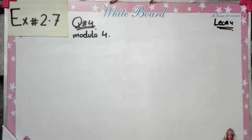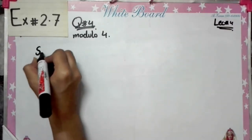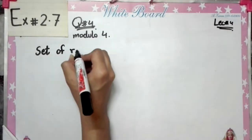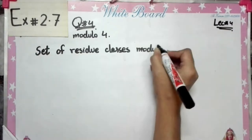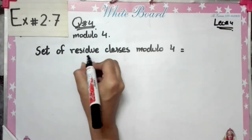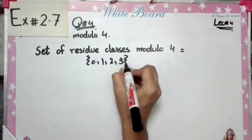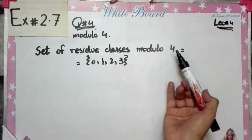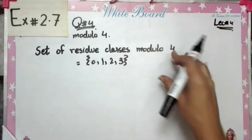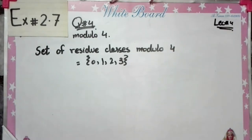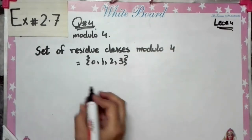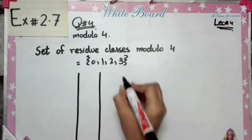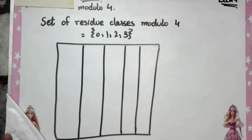We know that in this set there will be 4 small values. So we will write: the set of residue classes modulo 4 is equal to {0, 1, 2, 3}. We will take only these 4 values. To make the addition table for 4 elements, we will take rows as well as columns.